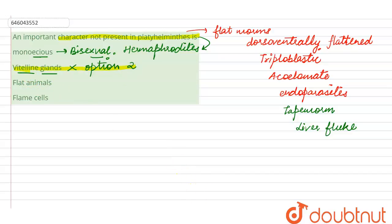The third option says that they are flat animals. As we have already explained, they are dorso-ventrally flattened and having bilateral symmetry, so this is right. Whereas flame cells are the cells which look like they have a structure like that of a flame, and they help in the process of the osmoregulation and the excretion.